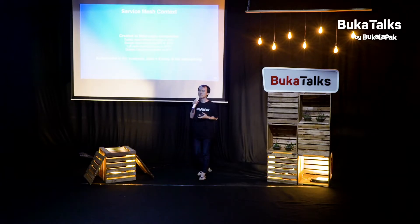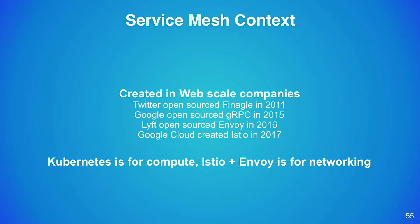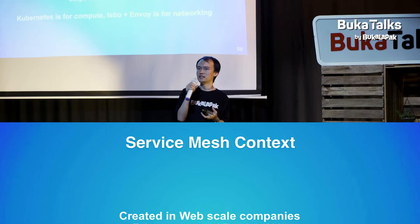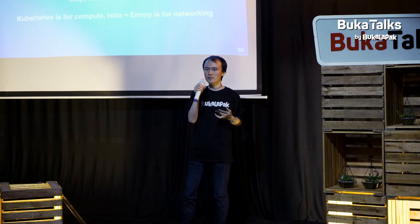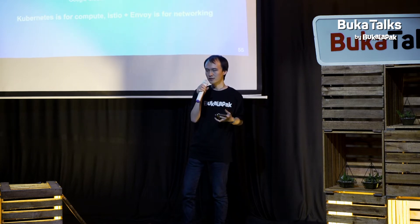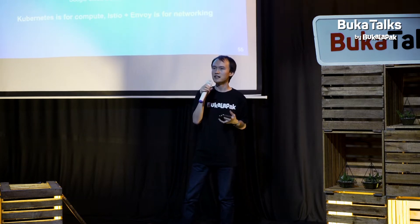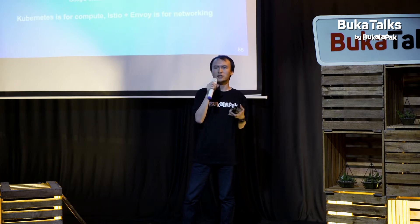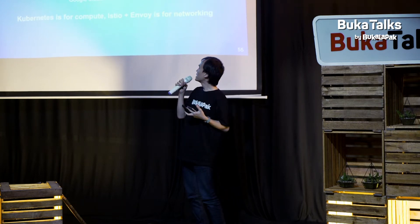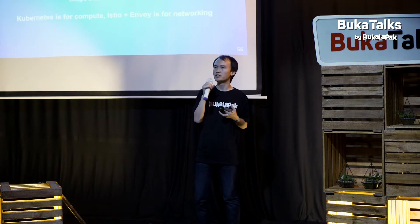The Service Mesh concept was really created in web-scale companies like Google, Twitter, and Lyft. Twitter open-sourced Finagle about seven or eight years ago — a JVM-based library providing similar features that Envoy provides today: retry, service discovery, observability, logging, and tracing. And Google then open-sourced gRPC in 2016.